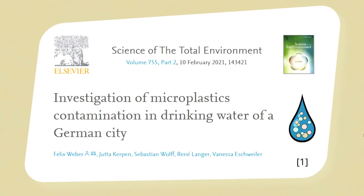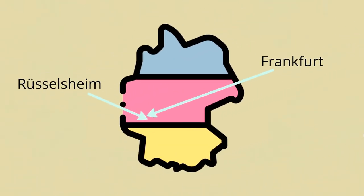Weber and co-authors published a study on the investigation of microplastics in drinking water in the German city of Russelheim. Never heard of it? Anyway, it's close to Frankfurt and has 66,000 inhabitants. Never heard of Frankfurt either? Well, that's somewhere in Germany.